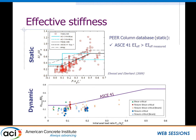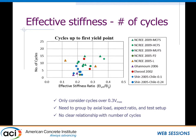Looking at this much smaller dynamic database, the effective stiffness values tend to fall in the same range — about 0.2 — which is lower than the ASCE 41 limit. Comparing the two datasets, it's very similar in terms of what it's telling us. So not too much different from the static to the dynamic database for effective stiffness.